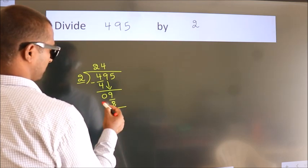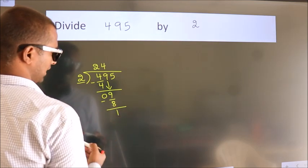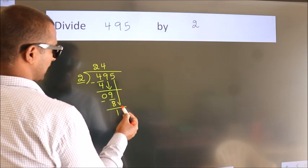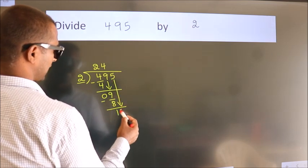Now we subtract. We get 1. After this, bring down the beside number. So 5 down.